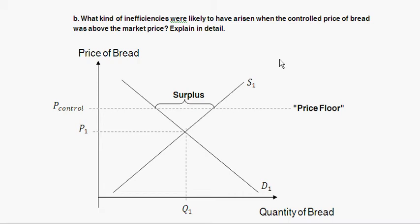The second inefficiency is inefficient allocation of sales among sellers. At this price, more sellers are willing to produce than would exist at the equilibrium. Without the price control, only the most efficient sellers would survive. Because the price is artificially high, inefficient sellers who would have been put out of business are allowed to continue producing, so the most efficient sellers are not the ones making all the sales.